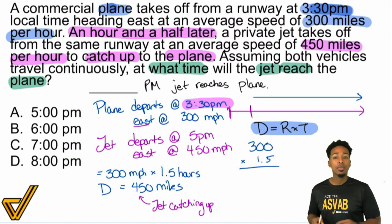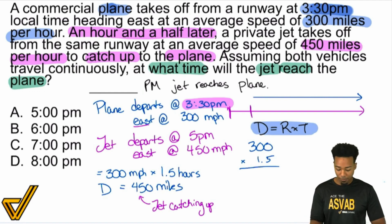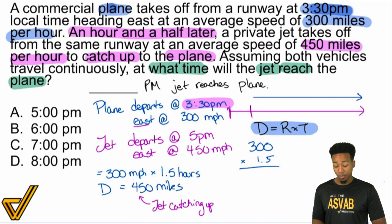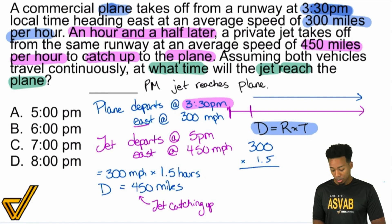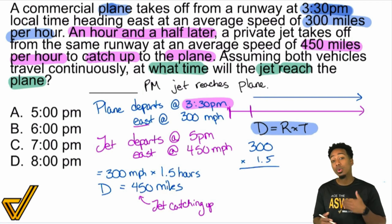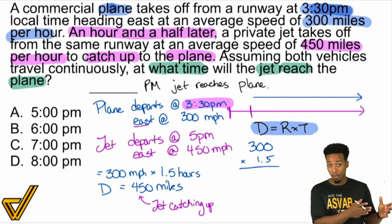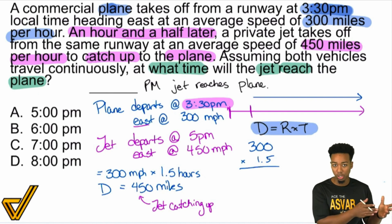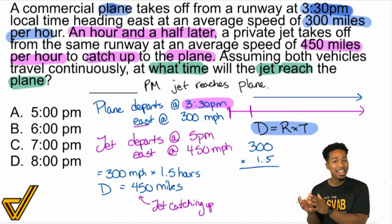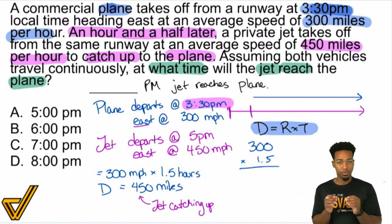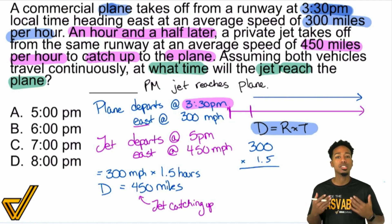Notice what I just did — the distance, rate, and time formula. Remember that everything in the distance rate time formula you plug in has to represent the same thing. First, we found the distance the plane traveled using the plane's rate and the plane's time — giving us 450 miles in that hour and a half. Now we're going to do this again using the distance the jet has to catch up, the rate at which the jet is catching up, and that will give us the time that the jet is catching up.